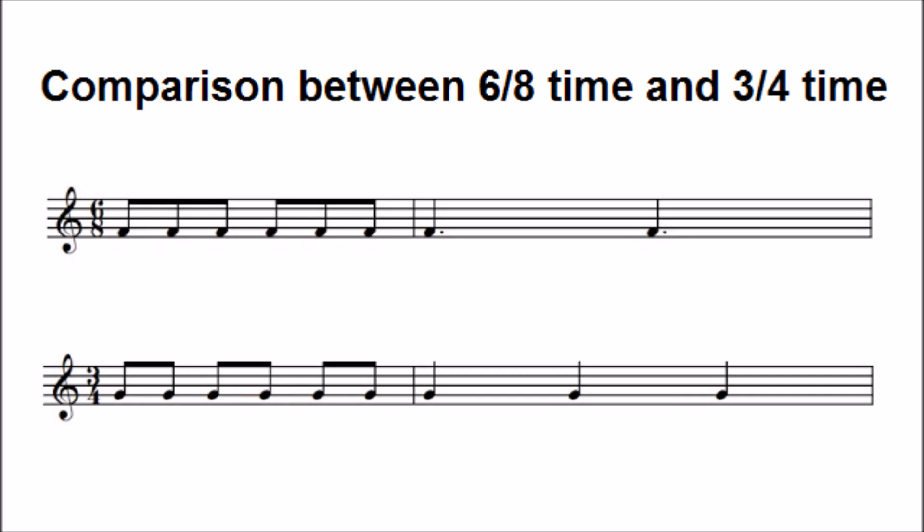In the second example, there are still six quavers in the bar, but they are grouped differently. They are grouped in twos, and the beats therefore are crotchets, because two quavers make a crotchet.